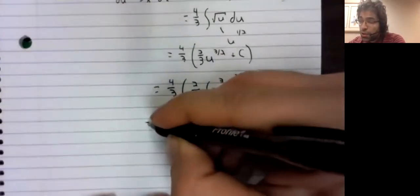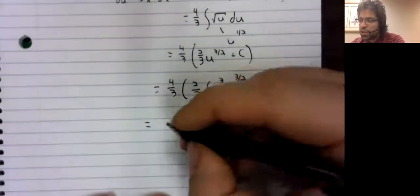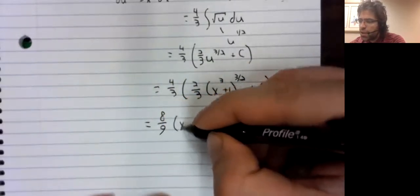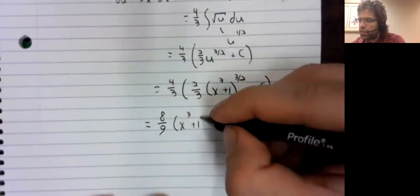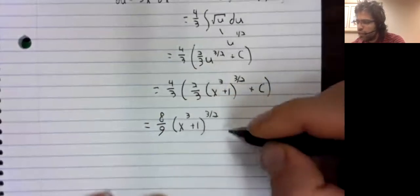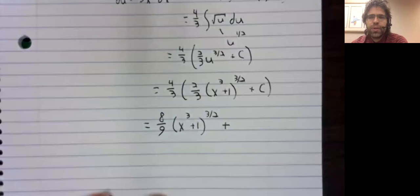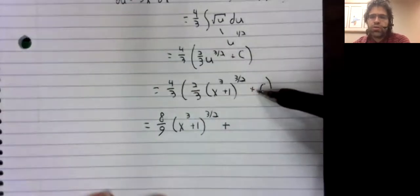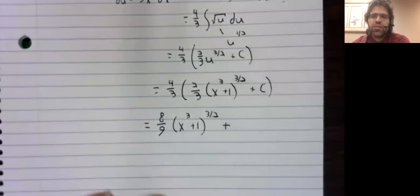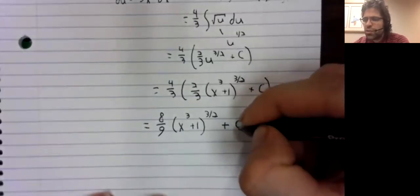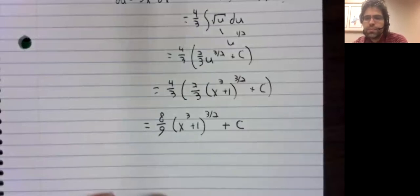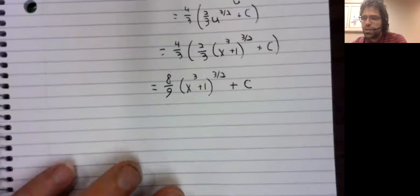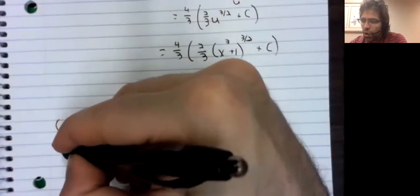So four times two, eight ninths times x cubed plus one to the three halves. And I don't remember if we've come across this before in calculus one, but if you have something like four thirds times an arbitrary constant, that's still an arbitrary constant. So we just write c. That was a fair amount of work, but we're now ready to solve the problem.